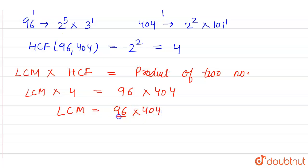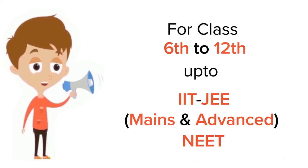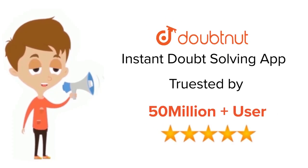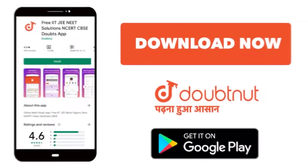So this LCM of two numbers is equal to 9696. For class 6 to 12, IIT-JEE and NEET level, trusted by more than 5 crore students. Download Doubtnet app today.